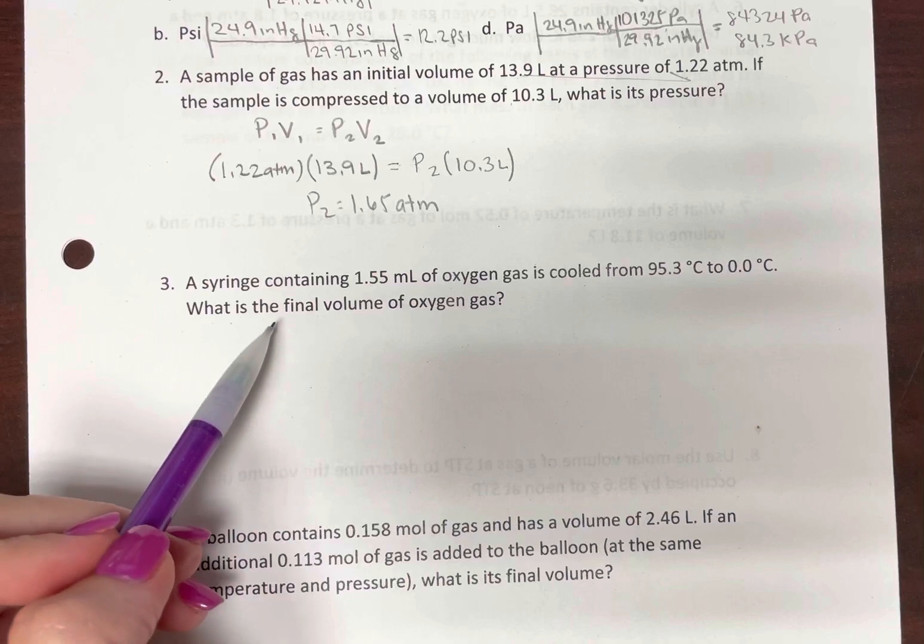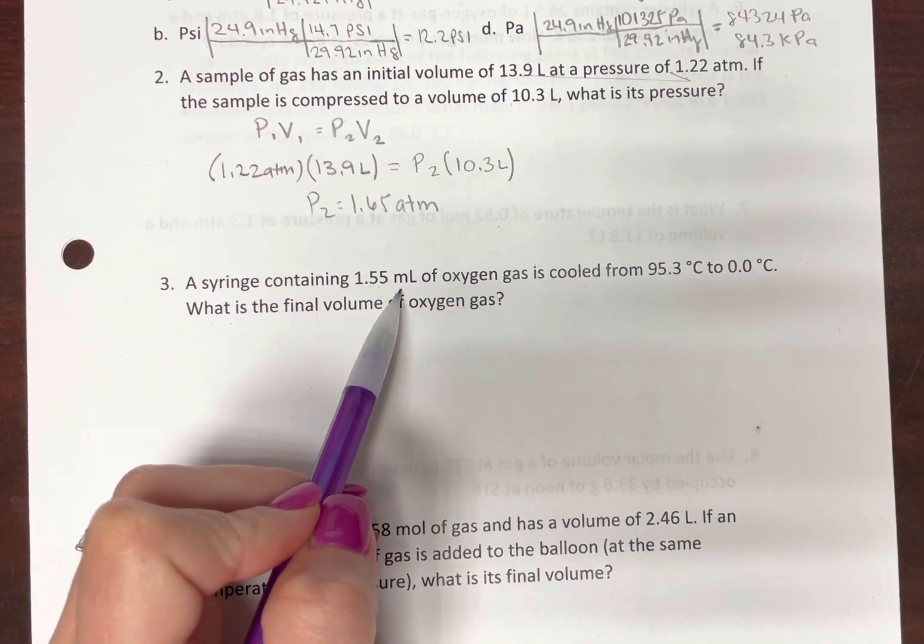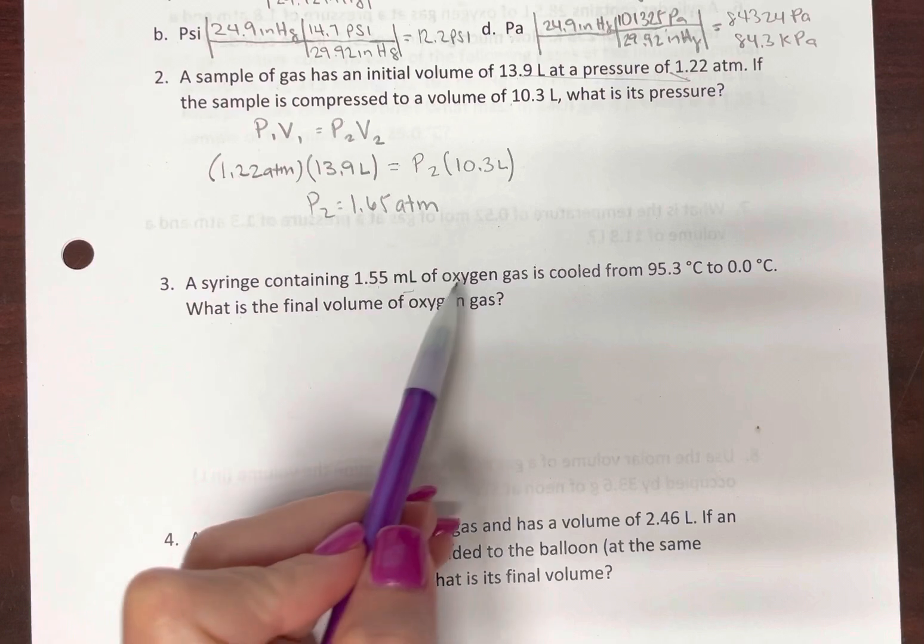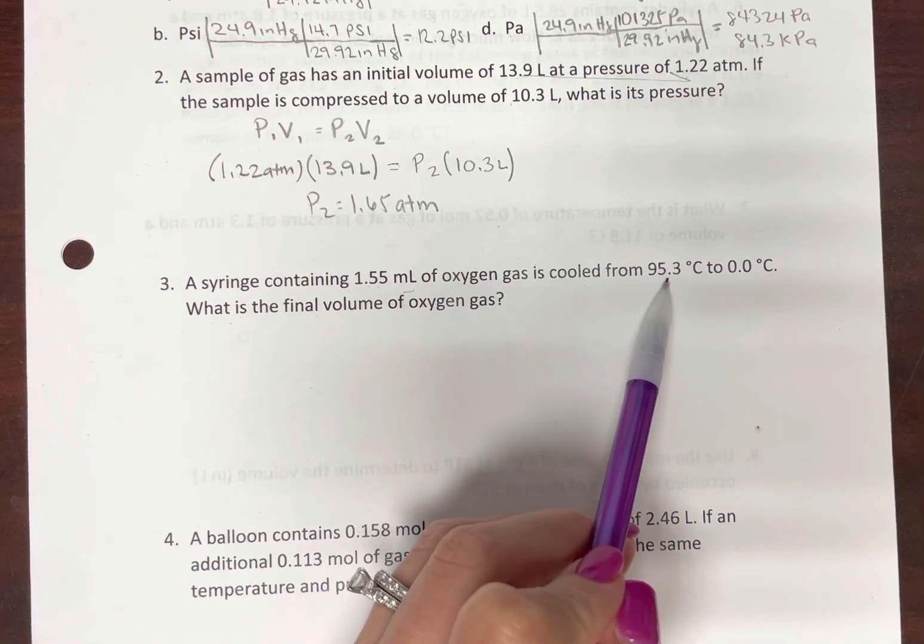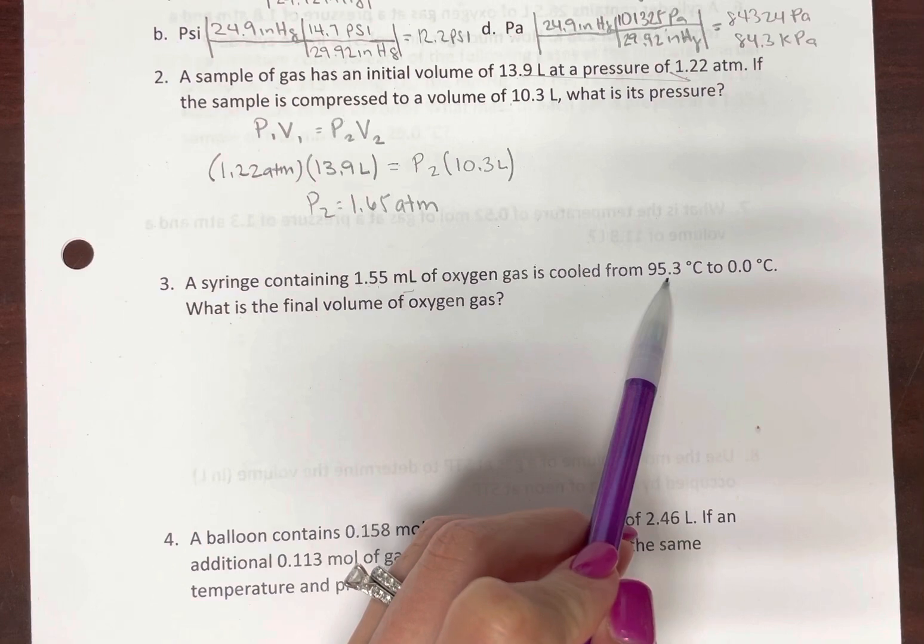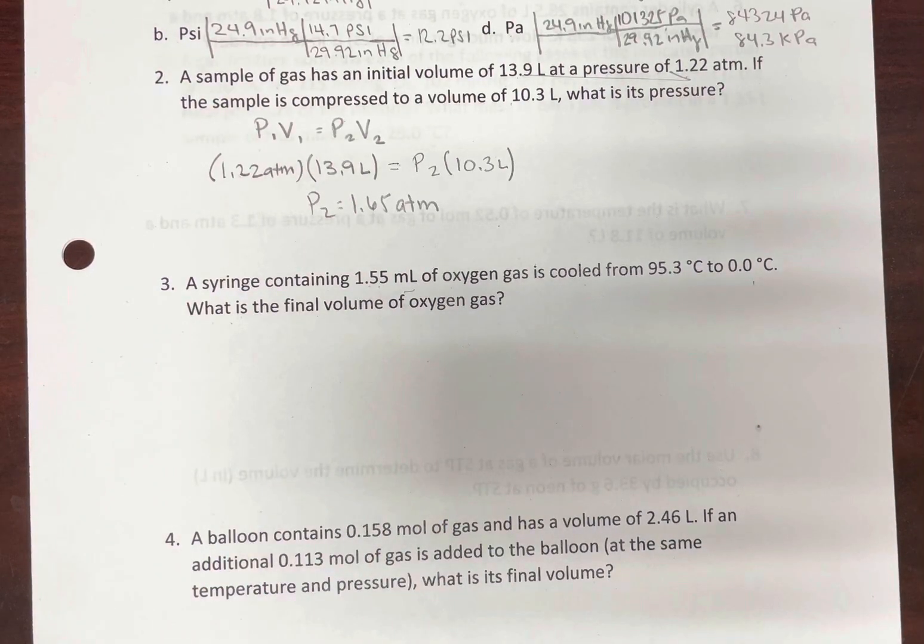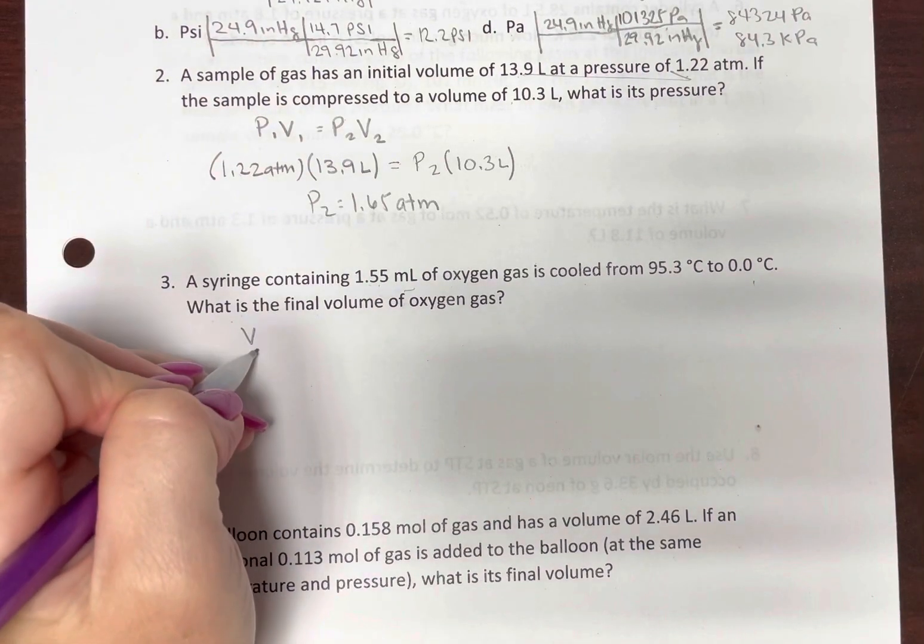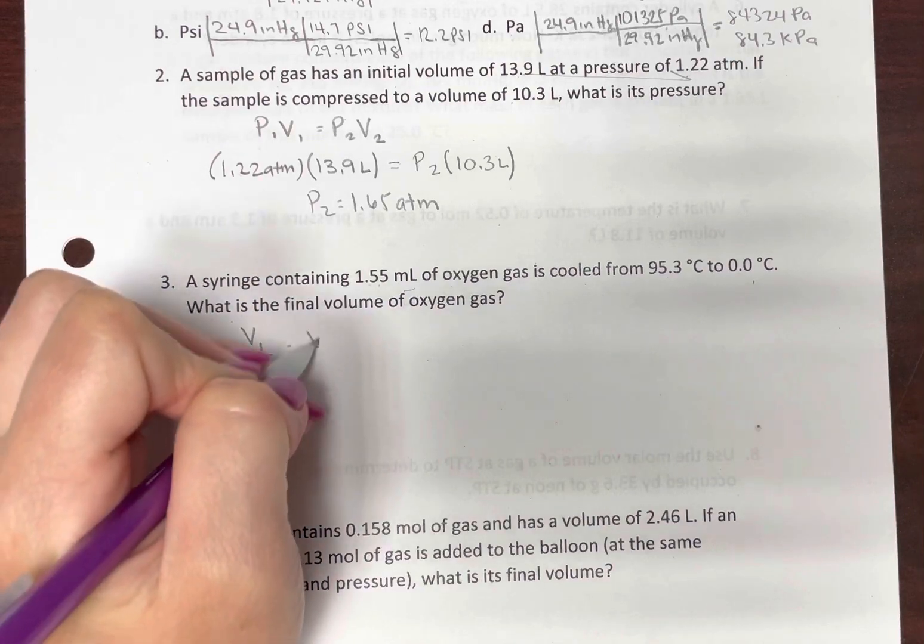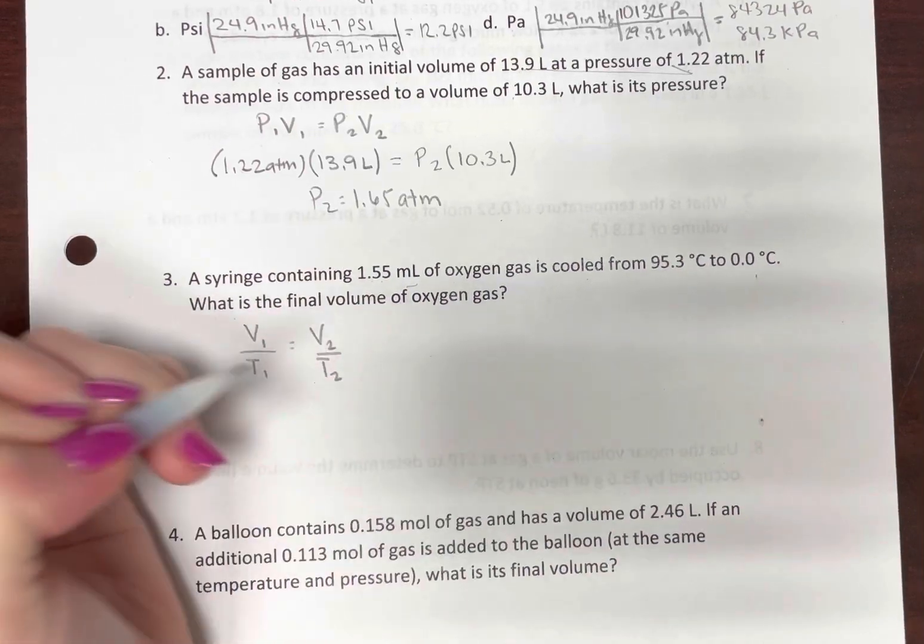Next, we have a syringe that contains 1.55 milliliters of oxygen, and we're cooling it from 95.3 degrees Celsius to zero, and we want to know what the final volume is. Okay, so this is Charles Law, and you can do it in whichever way you want. V1 over T1 equals V2 over T2.